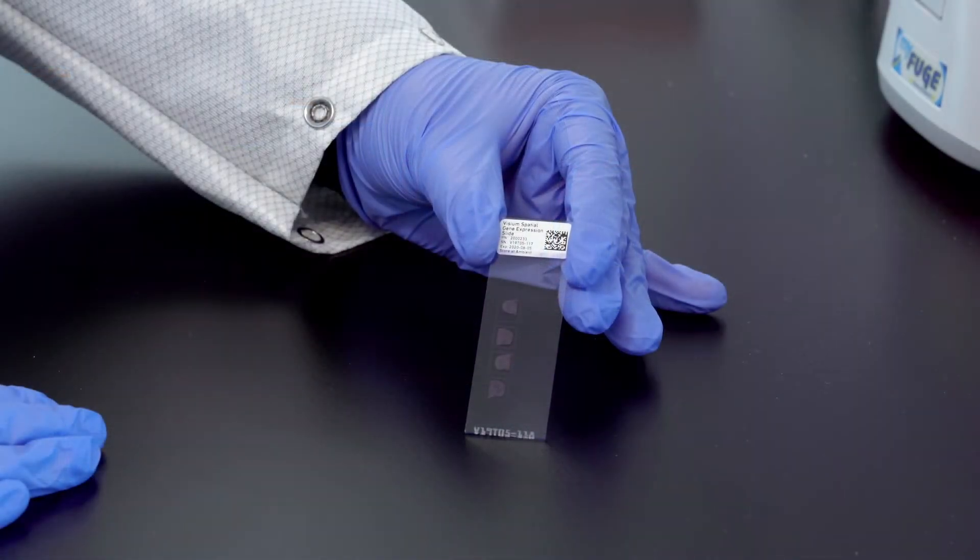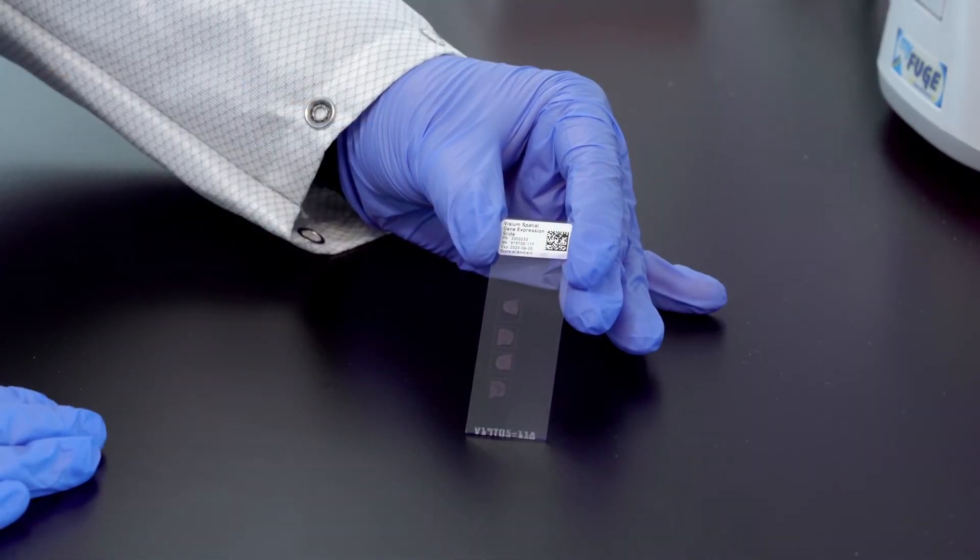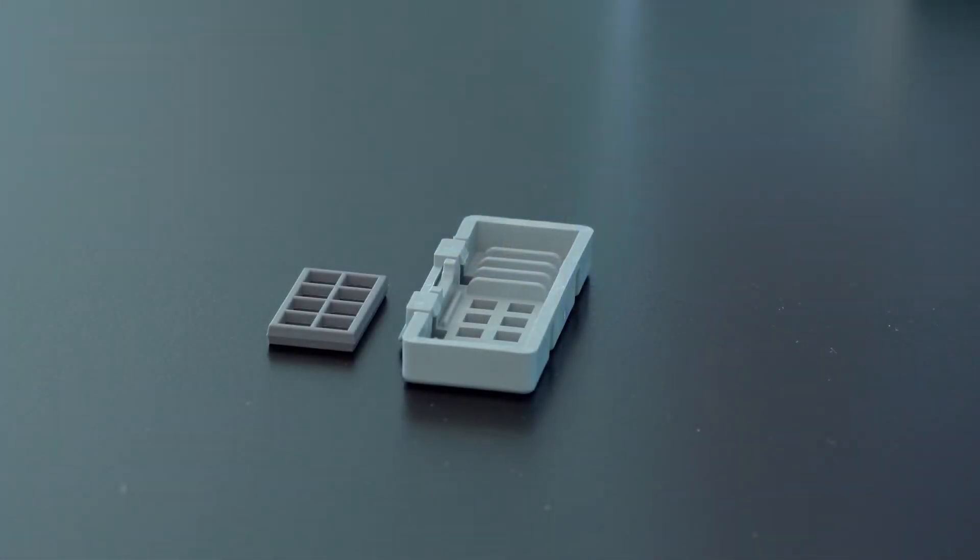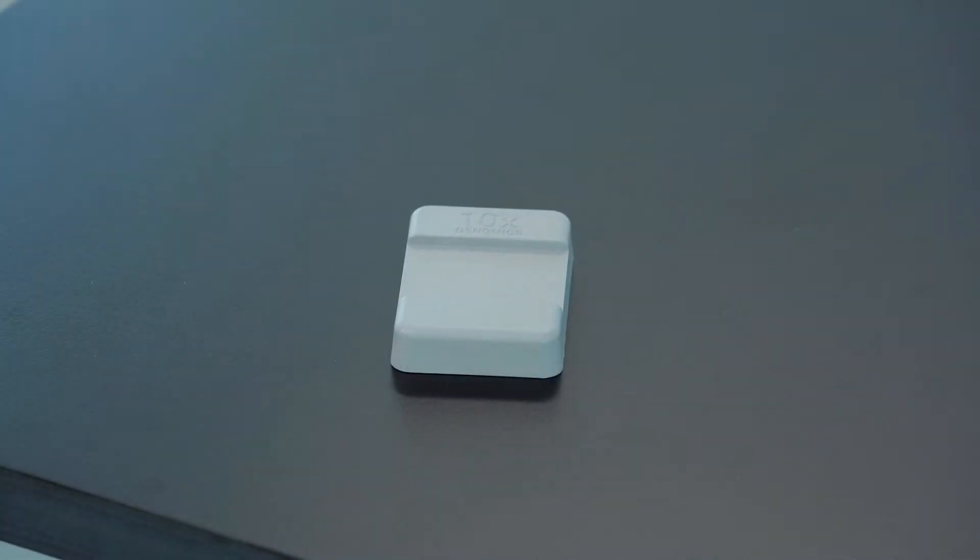We have completed tissue imaging. Now we will assemble the slide cassette. We have our Visium spatial gene expression slide with the fixed, stained, and imaged tissue. We have a slide cassette, a gasket, and the slide alignment tool.